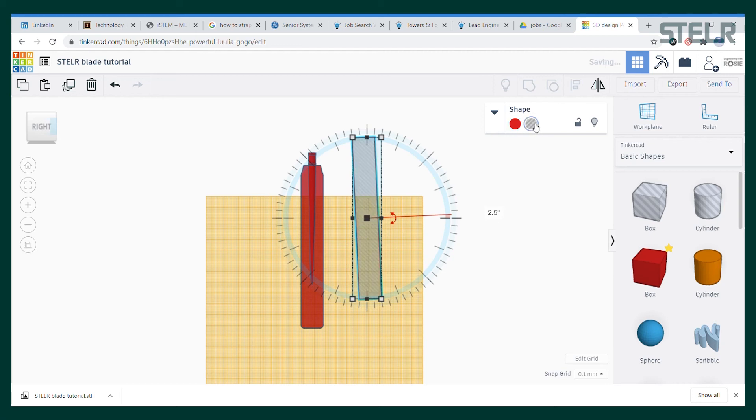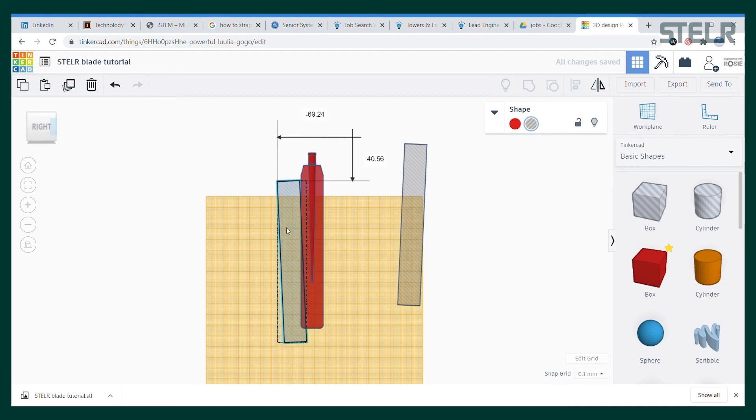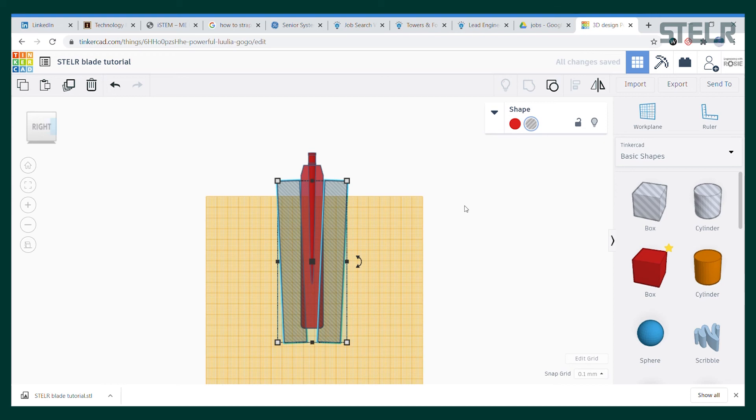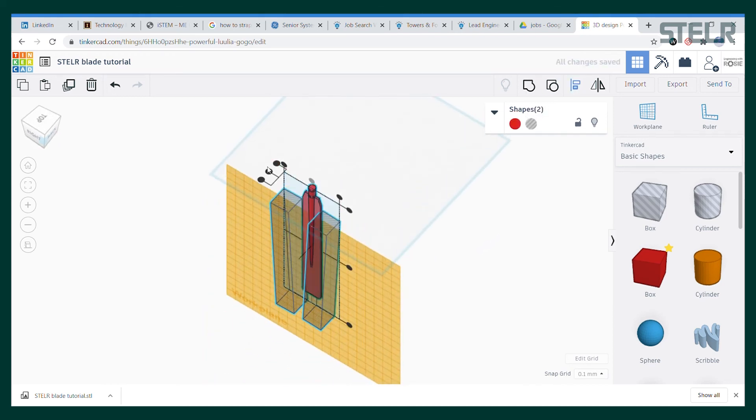I'm going to make a copy and mirror it and then align the tops of these parts and group them. Finally I'll position them roughly where I want to cut the sides and align the line with the center of the blade so that the cuts are symmetrical and then group everything to make the cut through the blade.